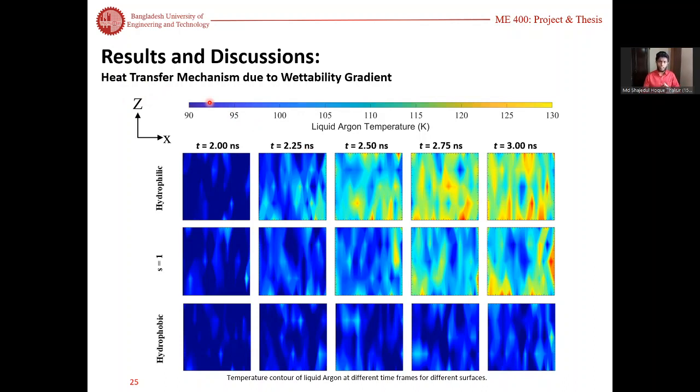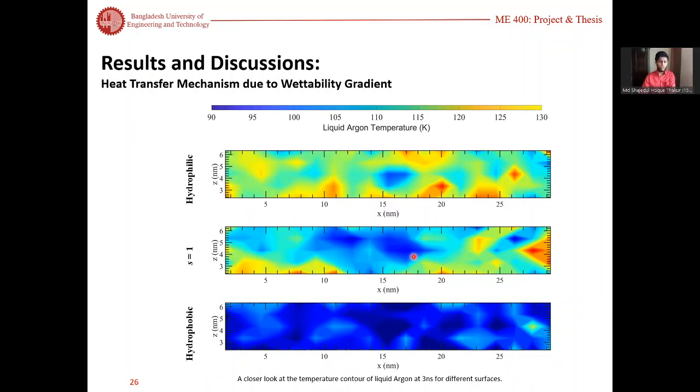To explain this we look at the temperature contour over the surface. We see that for hydrophilic the surface heats uniformly, and so for hydrophobic. However, for s equal to one or sFGW surfaces we see some temperature gradients on the surface. If we take a closer look at the contour, we see there are some local spots of hot and cold next to each other, which is due to the hydrophobic and hydrophilic atoms being next to each other in the surface.